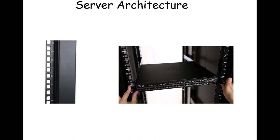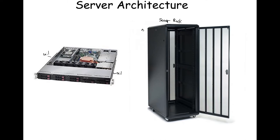On the side of the rack, you'll notice tick marks. Each one is 1.75 inches, also called 1U or 1 unit. A typical rack-mounted server is one 1U unit. The entire rack enclosure can accept a total of 42 of these 1U devices, so full-size racks are often called 42U enclosures.